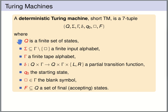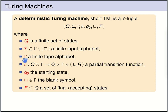The set of states, the input alphabet, the starting state, and the final states are basically the same as for finite automata. The transition function is defined slightly differently, and additionally we have a blank symbol and the tape alphabet.